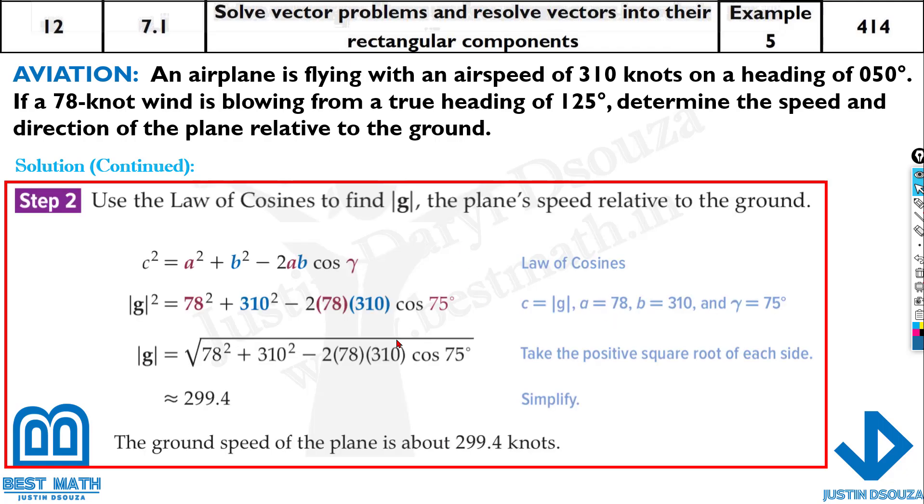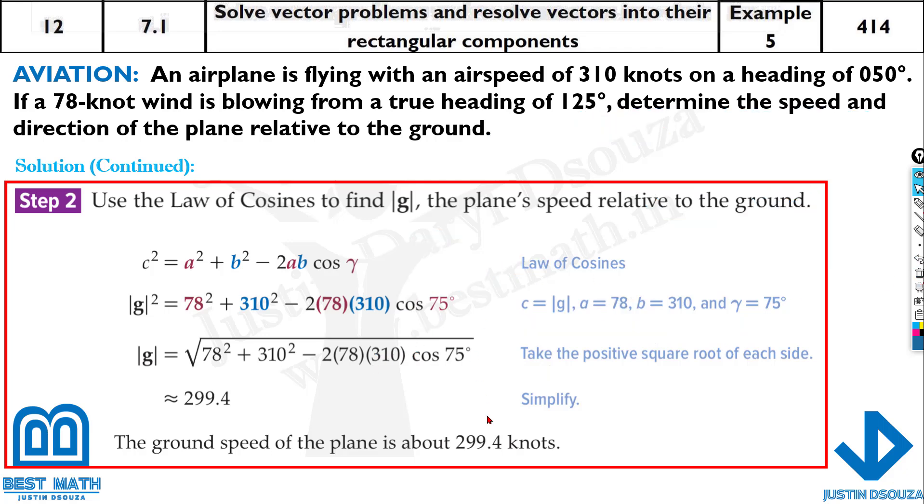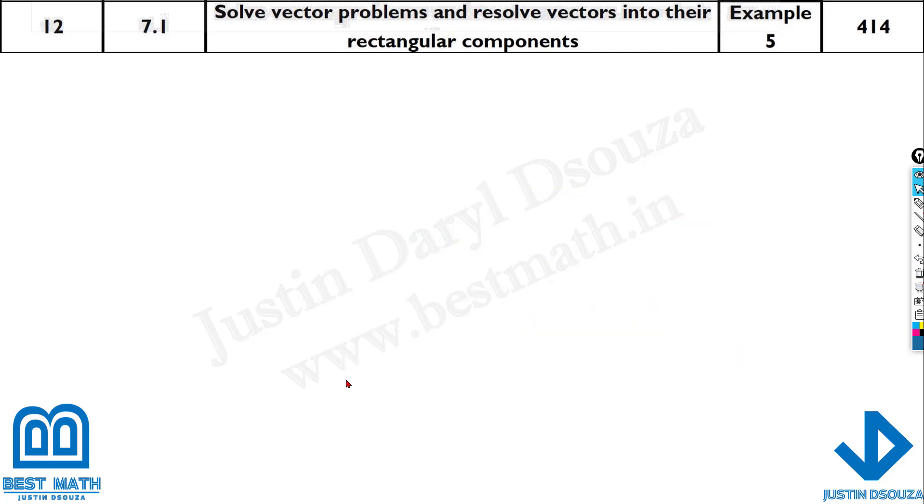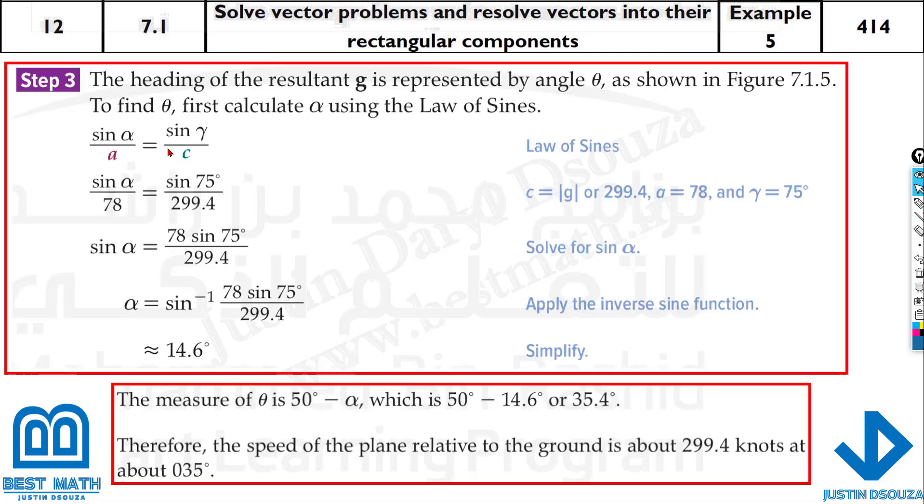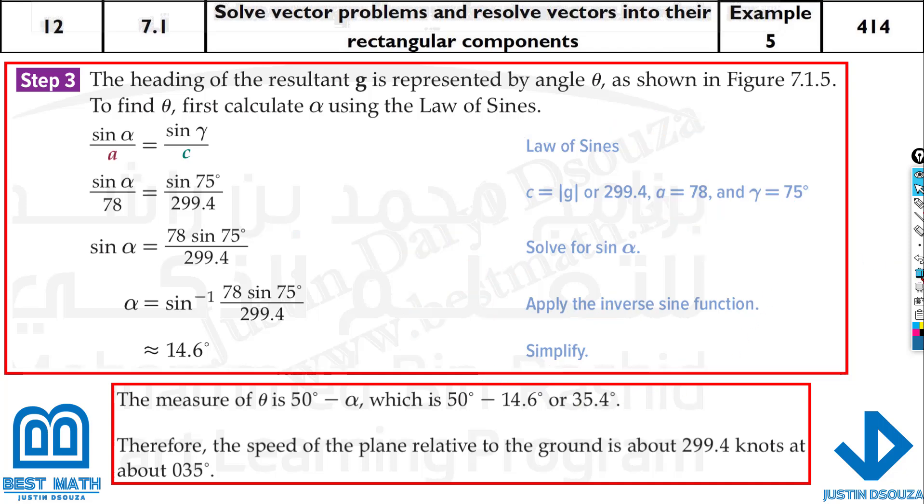So that's how we solve it. Let's look at the answer. Cosine rule, we got the same answer, 299.4. That is the speed. And then we have to find the angle. Yeah, it is, sorry not 15. What was I saying? It is 50 degrees minus 14.57. That is 35.4. Yes, exactly correct. So that is the answer.